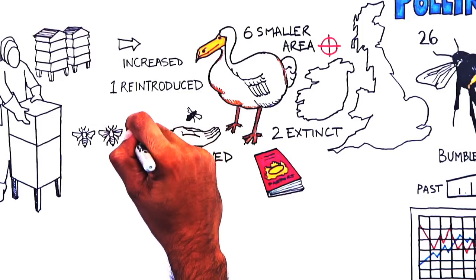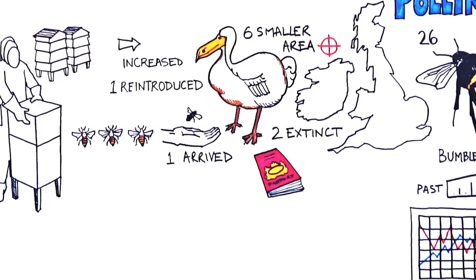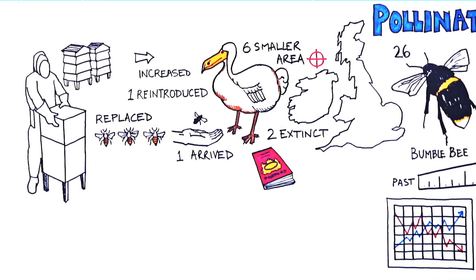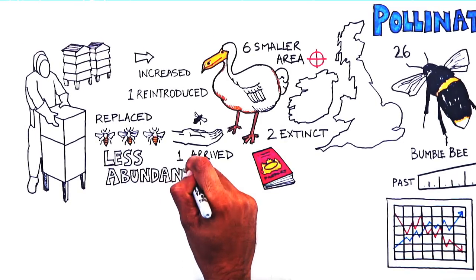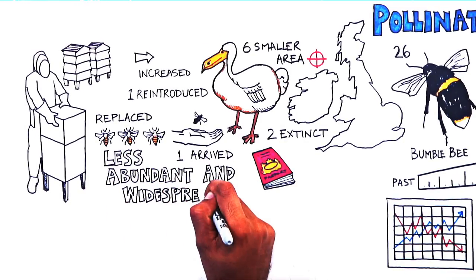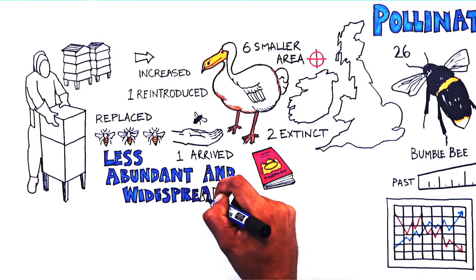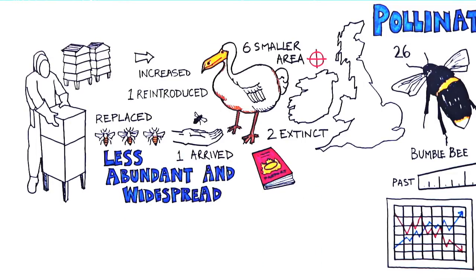However, unlike wild pollinators, these managed honeybees can be replaced when colonies are lost. Overall, our interpretation of the evidence is that wild bees and other pollinators are generally less abundant and widespread than they were in the 1950s.